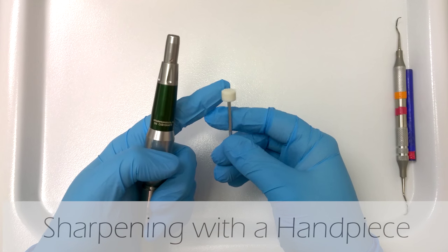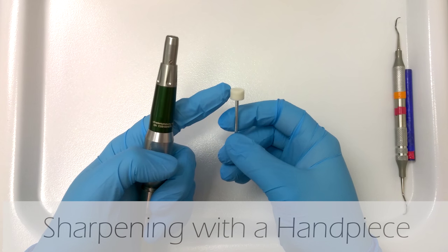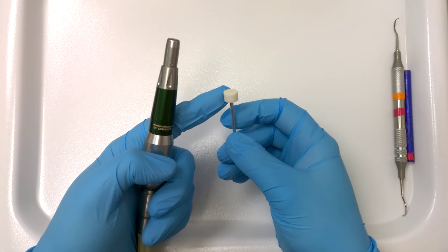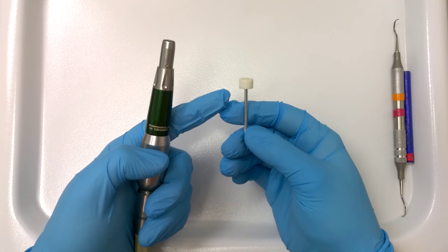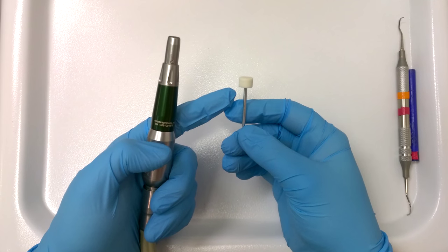You can buy them from any of your distributors online and you can get different stones if you have a particular stone you like, different grits. This one just happens to be Hu-Friedy, but all the brands make them.